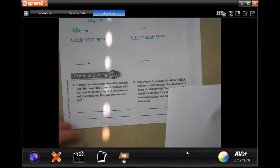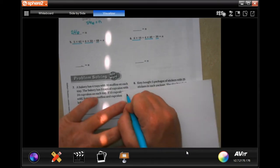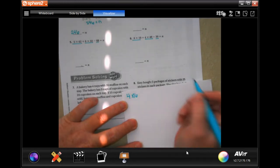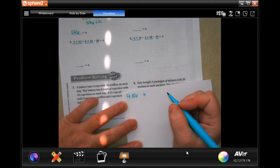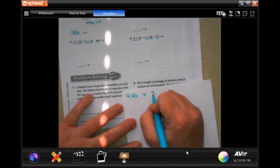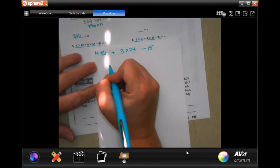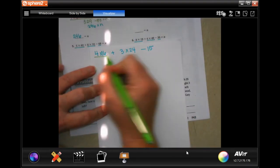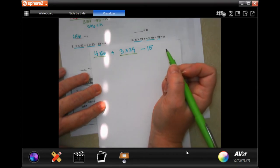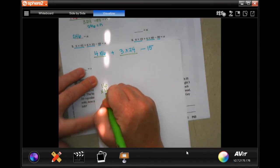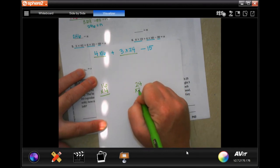We're going to go down to number 7 and it says the bakery has 4 trays with 16 muffins on each tray. The bakery has 3 trays of cupcakes with 24 on each tray. If 15 cupcakes are sold, how many muffins are left? So we have 4 trays of 16 muffins, right? And plus the bakery has 3 trays of 24 cupcakes and then they sold 15. So I got to do those first. I got to do my multiplication first.